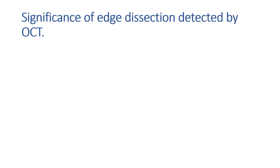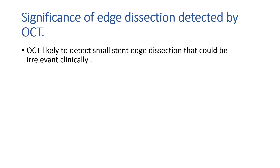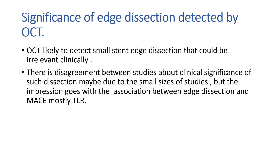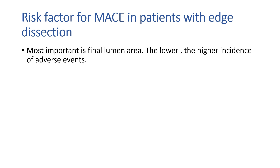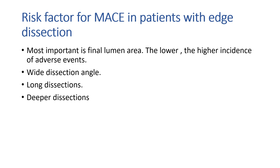What is the significance of edge dissection when detected by OCT? OCT is very sensitive and can detect very minor edge dissections, which might be clinically irrelevant. There is disagreement between studies about clinical significance, possibly due to small study sizes. Overall, there is an impression of an association between edge dissection and MACE, mostly target lesion revascularization. The most important risk factor for MACE in a patient with edge dissection is final luminal area — the lower the area, the higher the incidence of adverse events. A wide dissection angle, long dissection, and deeper dissection are also important. Most of these factors were present in our case, although the final luminal area was not very much reduced.